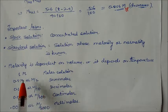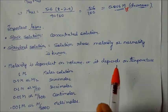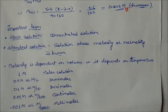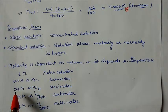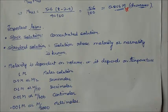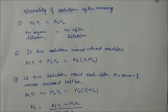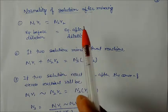Molarity depends on volume, and volume depends on temperature, so molarity is temperature-dependent. When volume changes, molarity changes. We can express molarity in different ways: 1 molarity is called a molar solution; 0.5 molarity is M/2 or semi-molar; 0.1 molarity is M/10 or decimolar; 0.01 molarity is M/100 or centimolar; 0.001 molarity is M/1000 or millimolar.